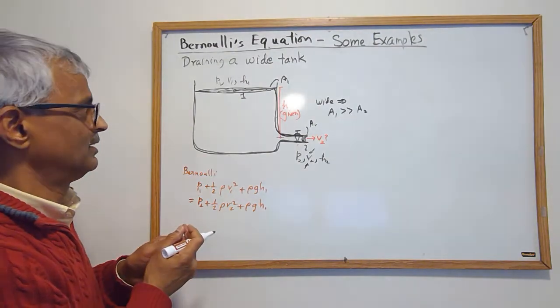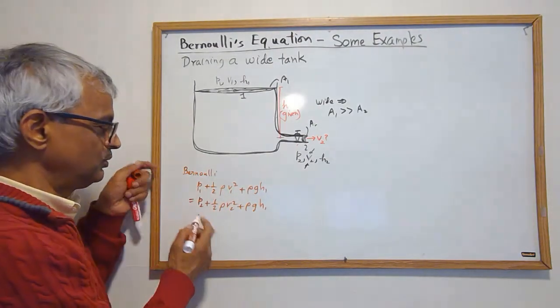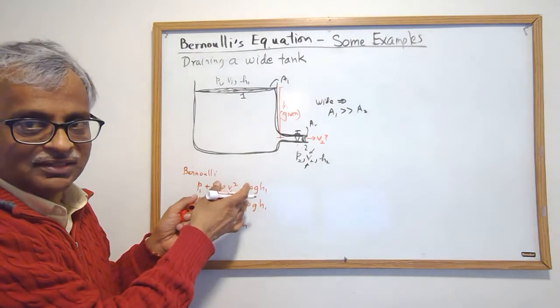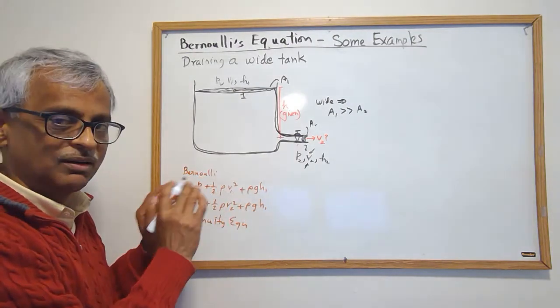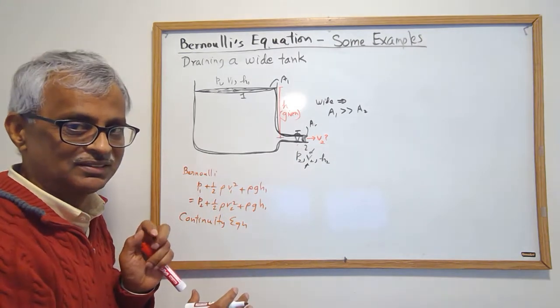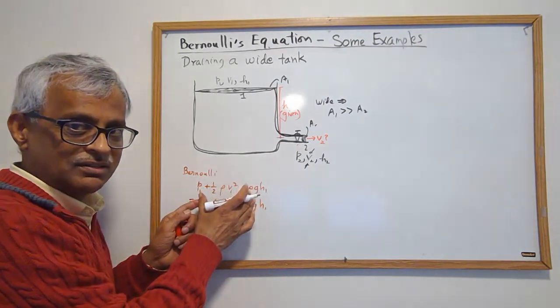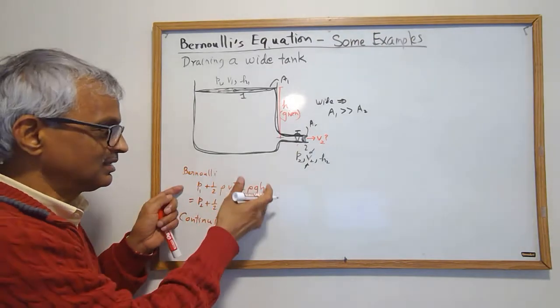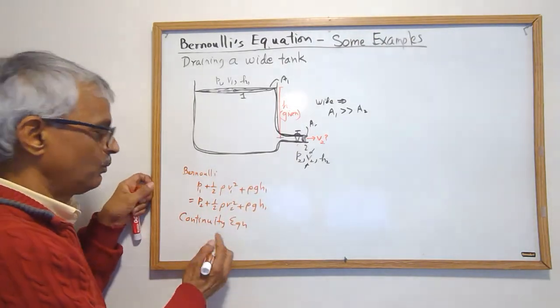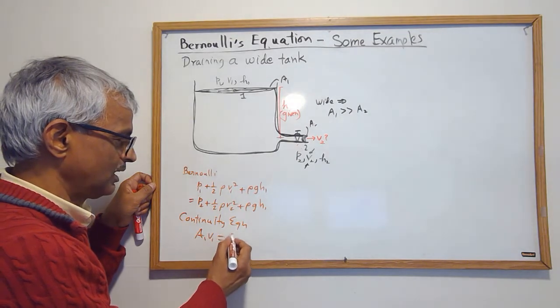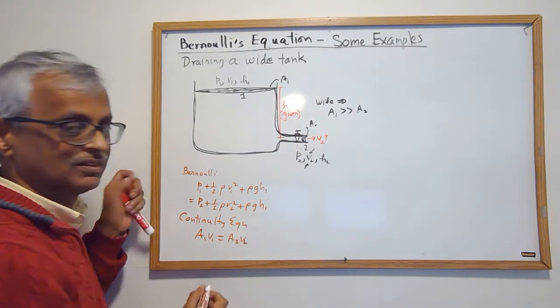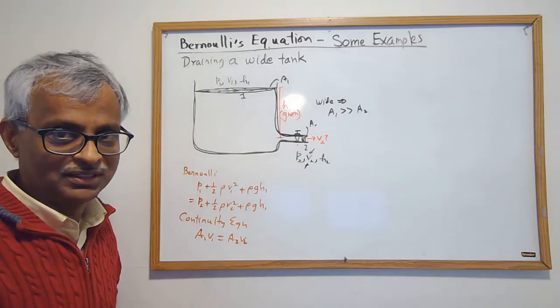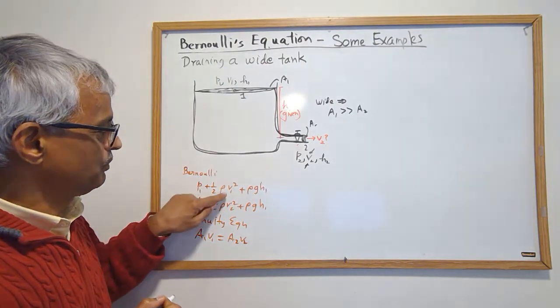One more thing I know in addition to Bernoulli is continuity equation. I know it was used to get this equation, but bear in mind that sometimes you have to use it separately. Sometimes this is enough, and sometimes you've got to combine this with A1 v1 equals A2 v2, and that is the case here.